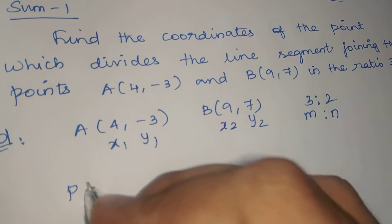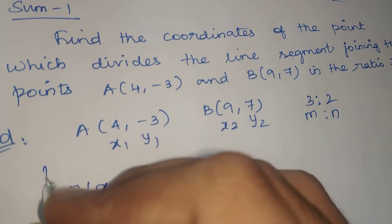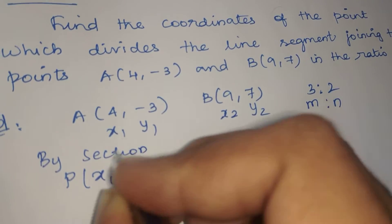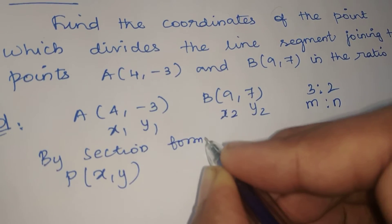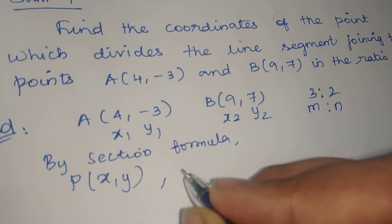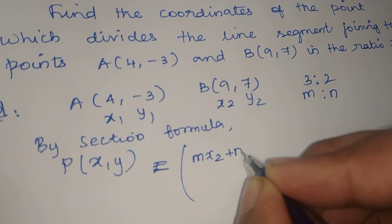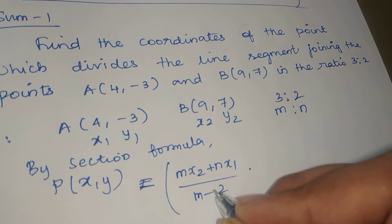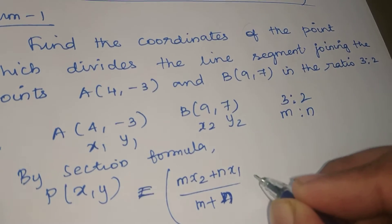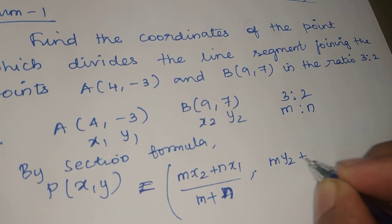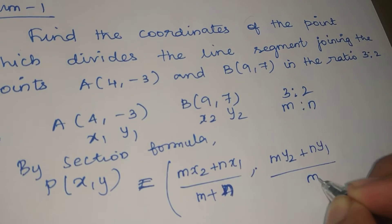What is the section formula? By section formula, P(x,y) equals (mx2 plus nx1) divided by (m plus n), and (my2 plus ny1) divided by (m plus n).